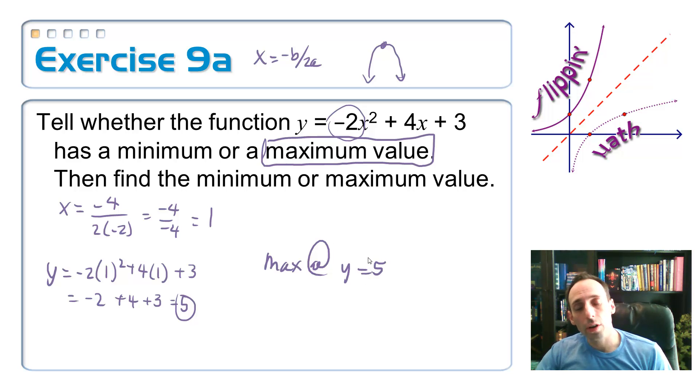You know what? Since I already know this, this can tell me how to find the range for my function. My range goes like this: maximum value is 5, and then it's everything down below 5.